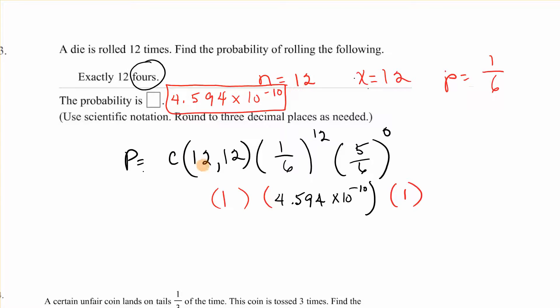So we have C of 12 comma 12, 12 things, and X is our, we're trying to get exactly 12 fours, times 1 sixth which was our probability raised to the 12th, times 1 minus 1 sixth is 5 sixth to the 12 minus 12 which would be 0. So we have 1 times this number times 1. And it does say use scientific notation, so that's what we would get. Probably come up that way on your calculator.